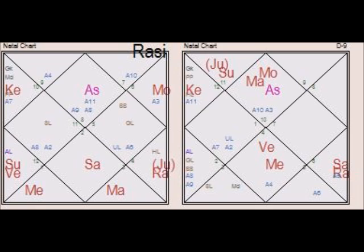Today we're going to discuss a very important chart which will prove the correctness of the principle or sutra of Sage Jaimini. This chart is the chart of Charles Sobhraj. We all know that Charles Sobhraj is serving a life imprisonment sentence right now in Nepal. He has been known as an international criminal — a serial killer who used to kill people for money. He got away from prison a couple of times because of his sharp and crooked criminal mind.